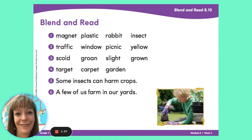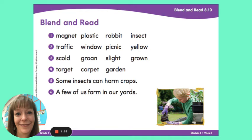I remember from earlier this week that we learned when you have syllables, each syllable has to have its own vowel. What is the vowel in the part 'in'? Yes, it's the I. And in the syllable 'set,' what is the vowel there? Yes, the E that makes the short E sound. In. Set. Great job.